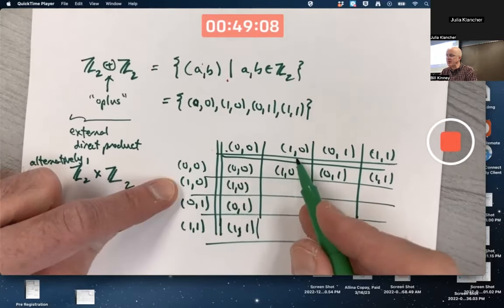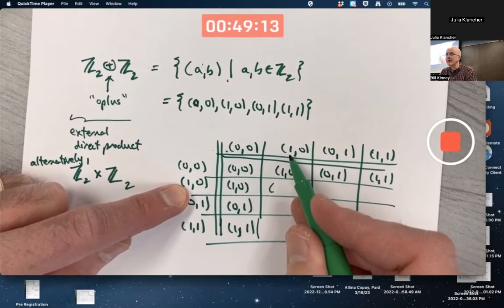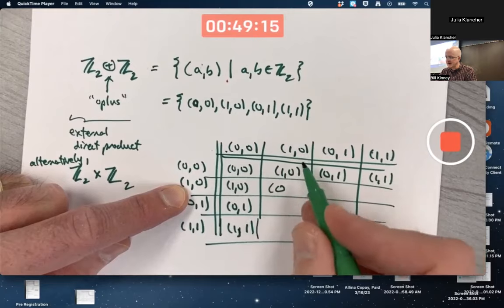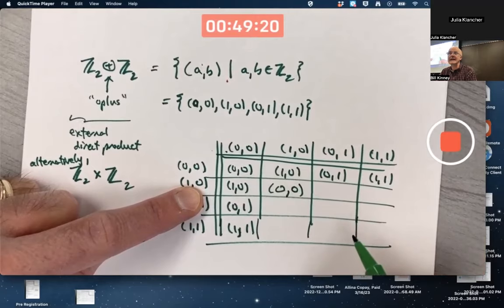What's (1,0) plus (0,0)? For the second component, you do 0 plus 0, mod 2 is 0. You get the identity.